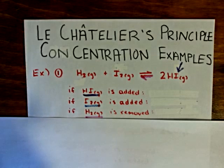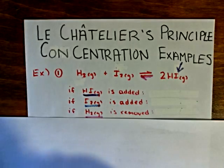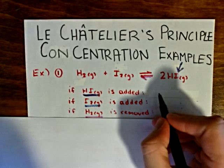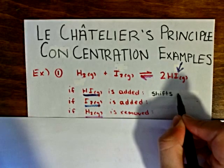But the system wants to maintain an equilibrium. So in order to maintain that equilibrium, it will consume that excess hydrogen iodide gas by turning it into the reactant. And in order to make more reactants, the equilibrium must shift to the left.